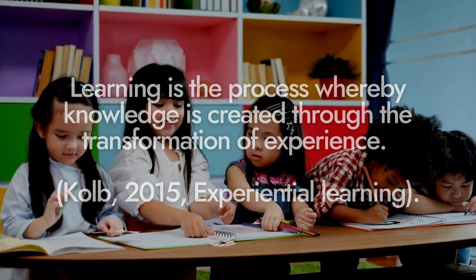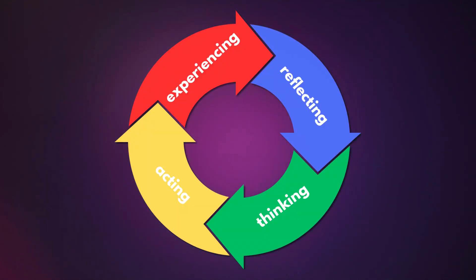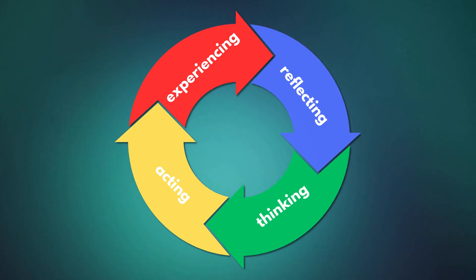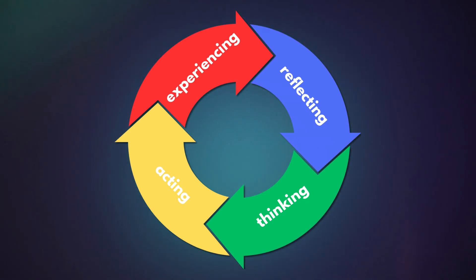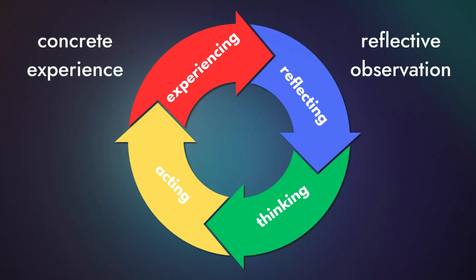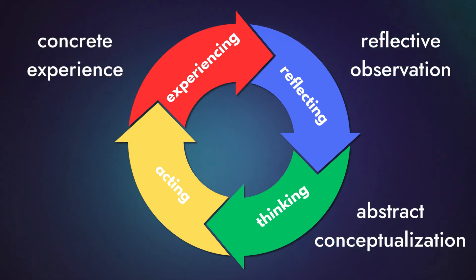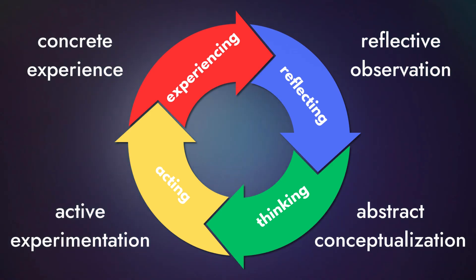According to Kolb, we learn best through a cyclical process of experiencing, reflecting, thinking, and acting. This process involves four stages: concrete experience, reflective observation, abstract conceptualization, and active experimentation. Let's break down each stage.